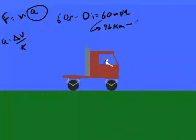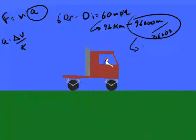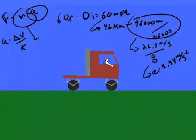60 miles per hour is roughly 96 kilometers an hour, and that's 96,000 meters. And since there's 3,600 seconds in an hour, that's 96,000 meters every 3,600 seconds. Now let's make that 26.7 meters per second. We divide that by your 8 second time, we get 3.34 meters per second squared.